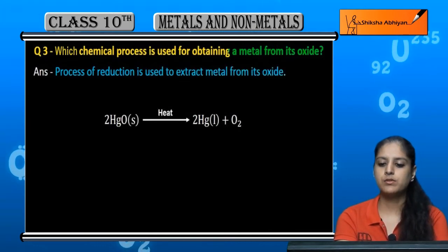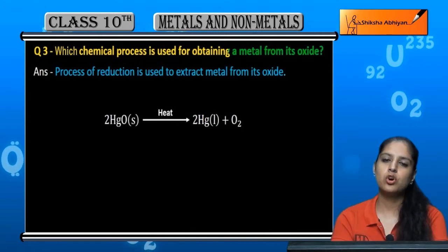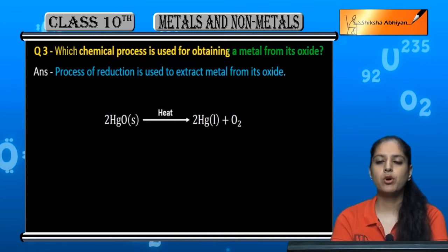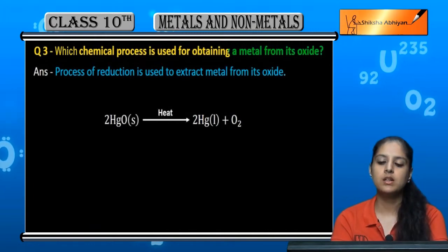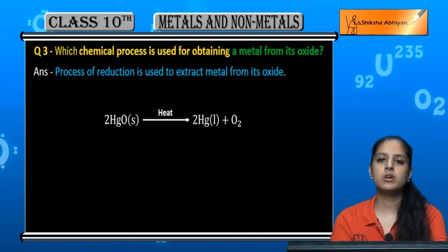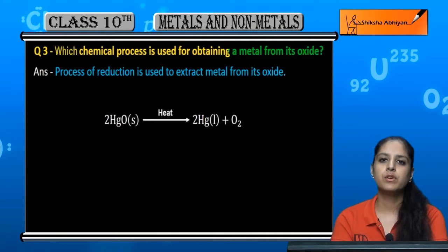If there is a metal in its oxide form, we have to convert it into elements or pure metal. From its oxide part, we have to remove oxygen, that means we are reducing it. So the process is reduction.